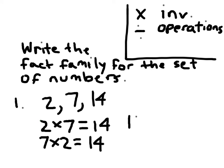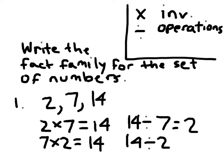Now we'll start with 14 and go the opposite way. 14 divided by 7 does equal 2, and 14 divided by 2 does equal 7. So this is the fact family for 2, 7, and 14, relating all of those numbers together. It's a multiplication and division fact family.